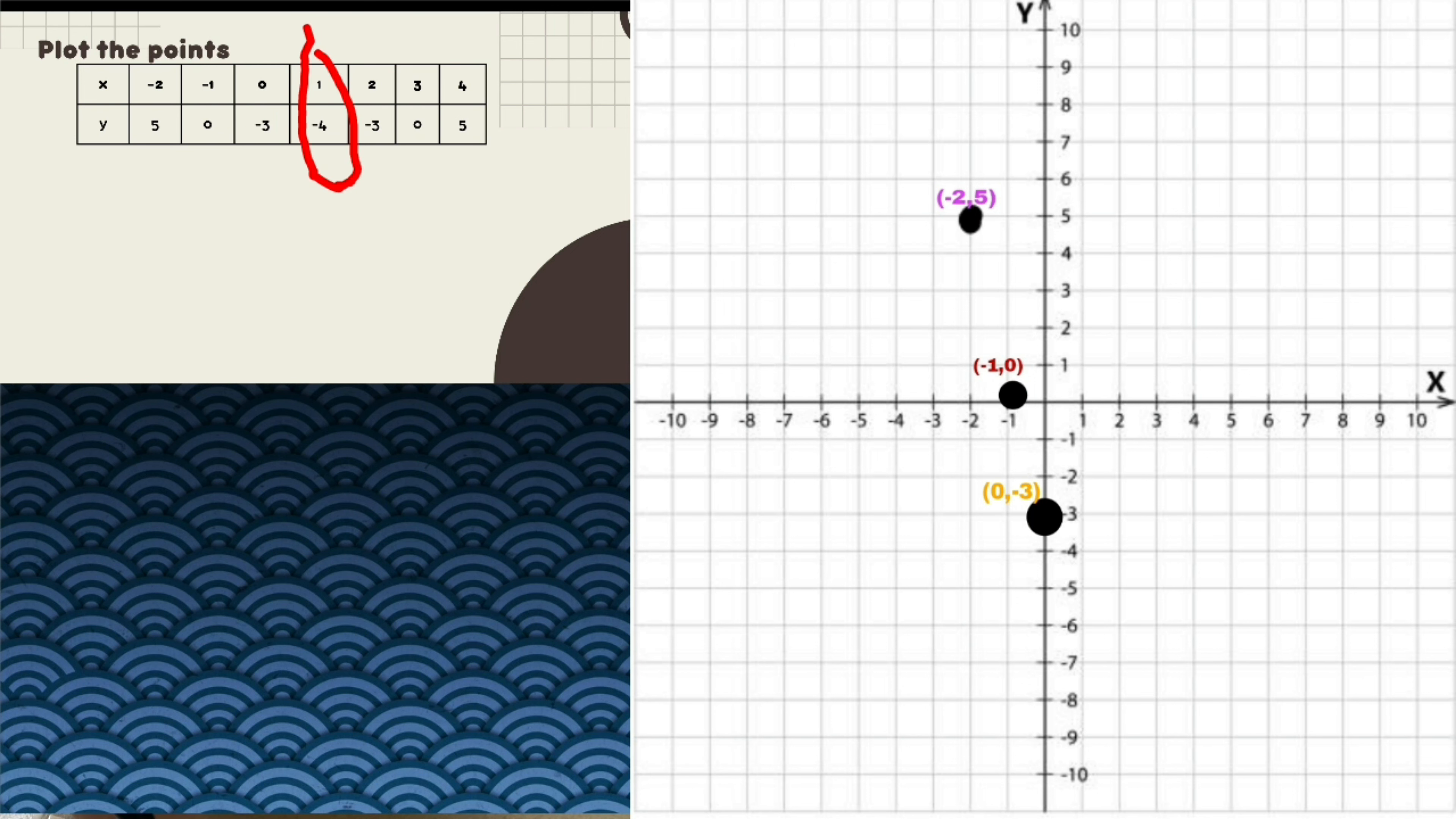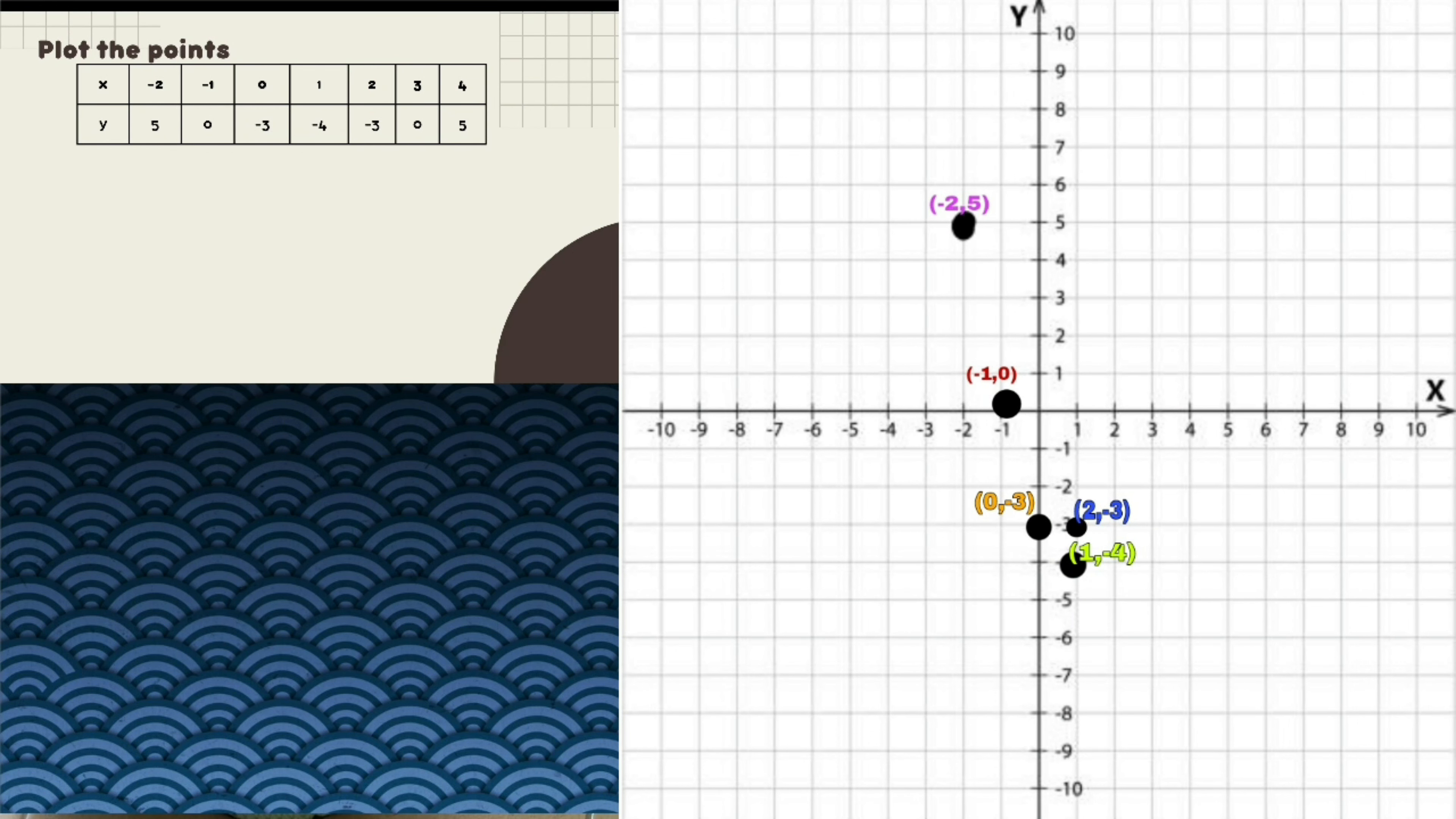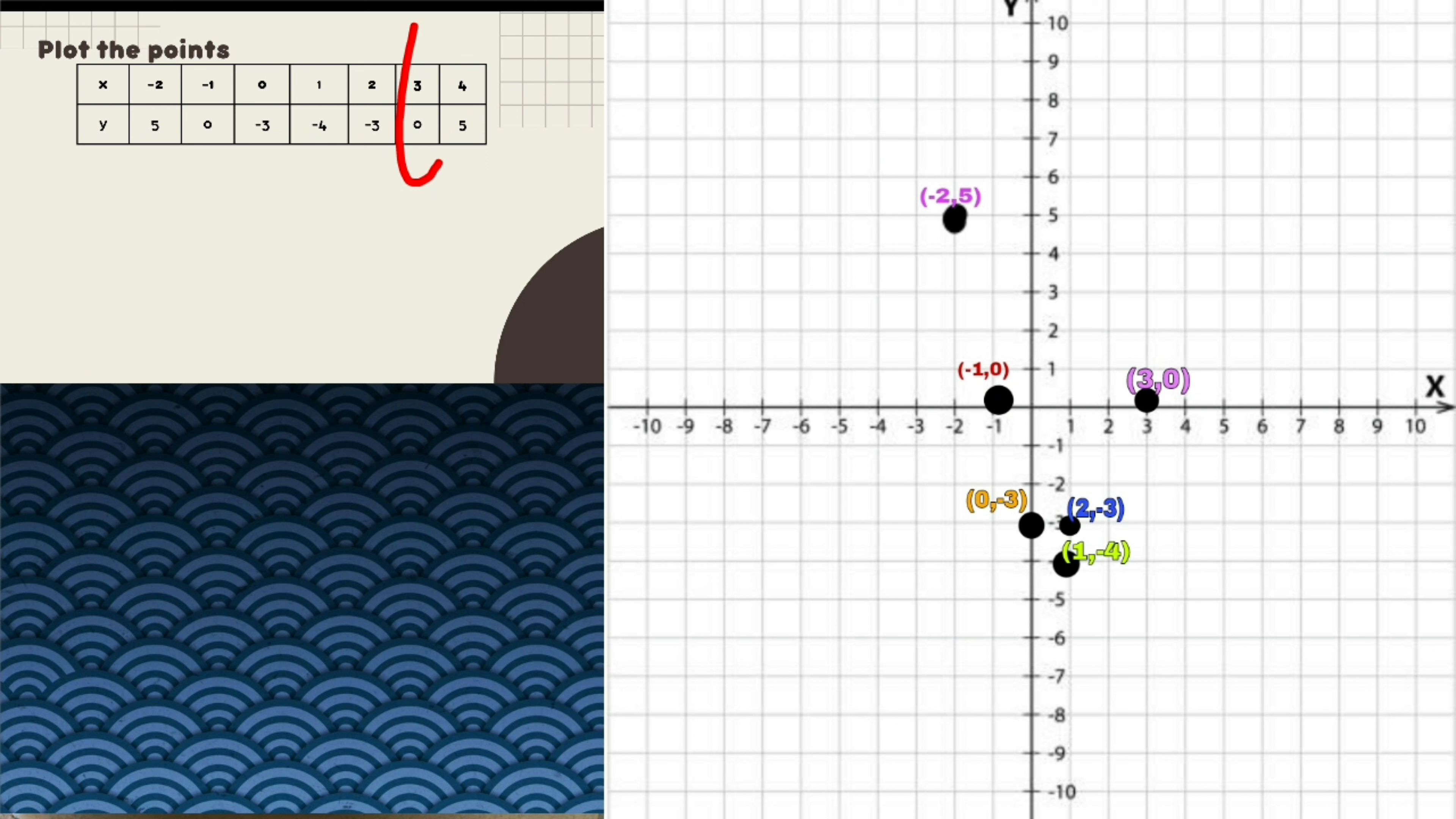Next is 1 and negative 4. This is plotted in quadrant 4. Our x is 1 and y is negative 4. Next is 2 and negative 3. This is also plotted in quadrant 4. Next is 3 and 0. Our x is 3, so this is plotted here and our y is 0. This is plotted here.